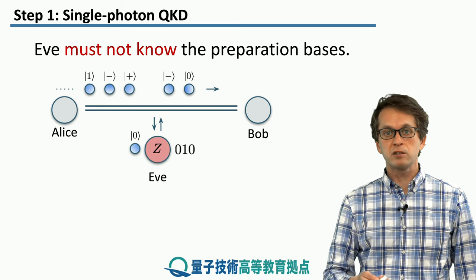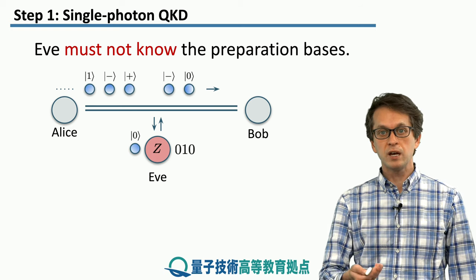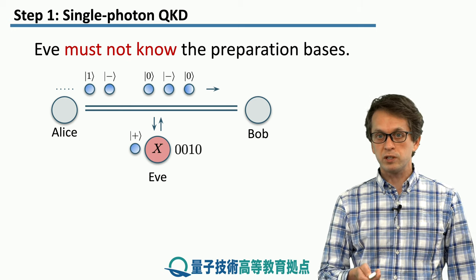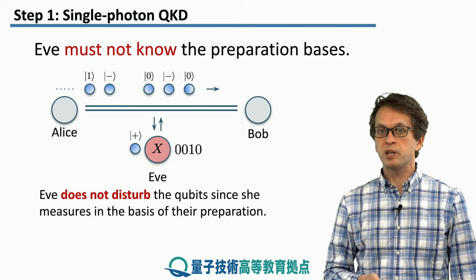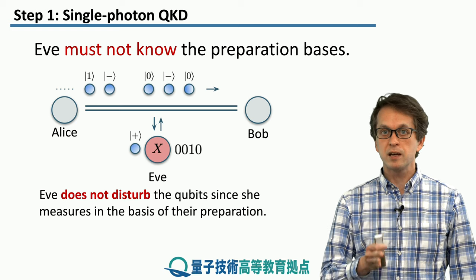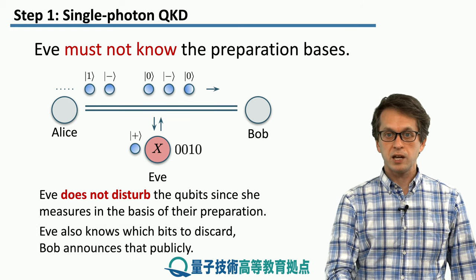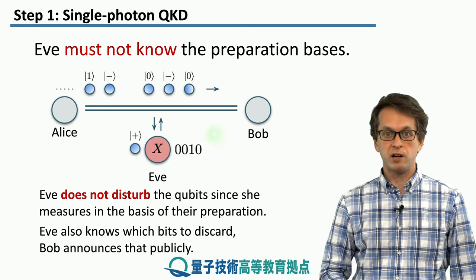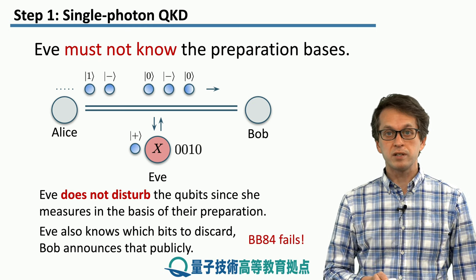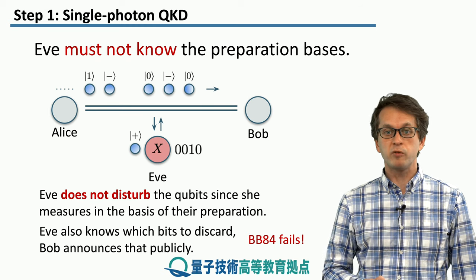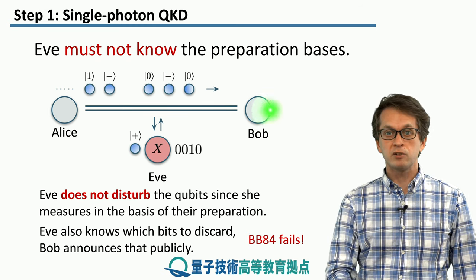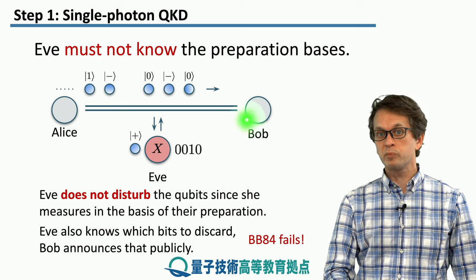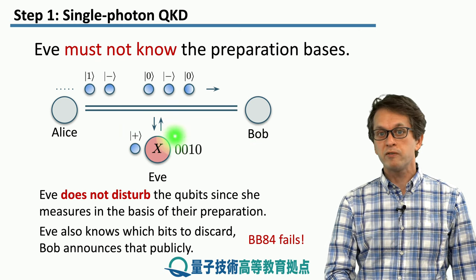And she repeats this procedure, so on and so forth. She measures in the Pauli Z basis for the third qubit, obtains a classical bit 0, and then resends that qubit back to Bob. So what she is doing is, although she's measuring these qubits, she is not disturbing them at all, because she's always measuring in the same basis in which they were prepared. In this way, she can actually build up a secret key that's perfectly correlated with the key that Alice and Bob are sharing. And of course, this is a big problem, because then the whole procedure of BB84 fails. Even though Alice and Bob can try to detect Eve as they would in the normal protocol, she has not disturbed any of the qubits. Therefore, they will never detect her presence.